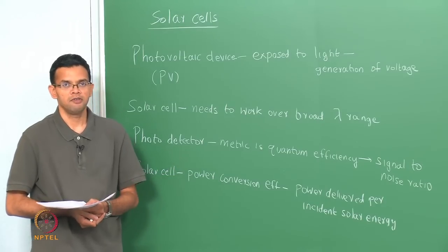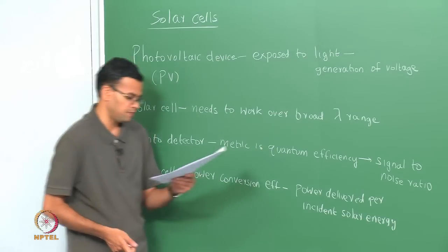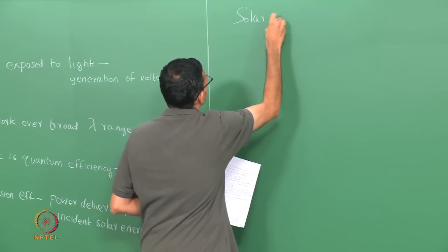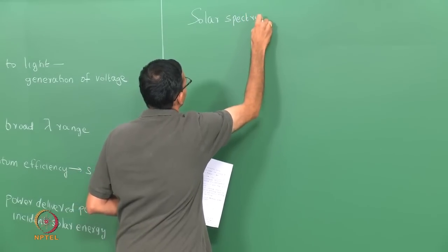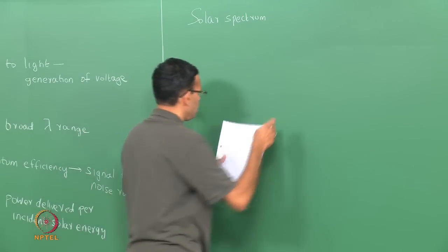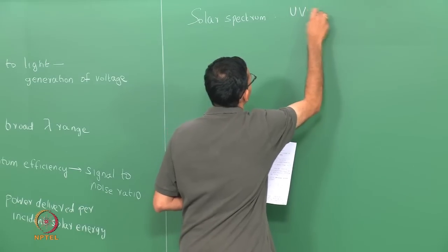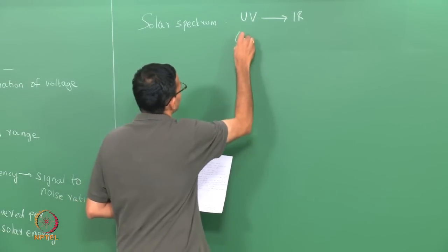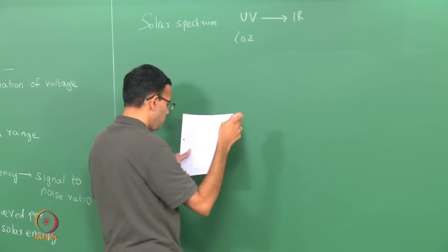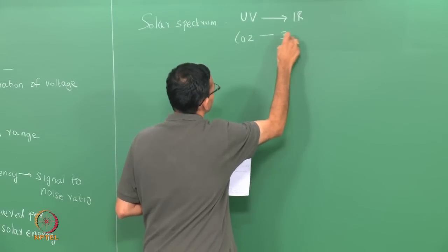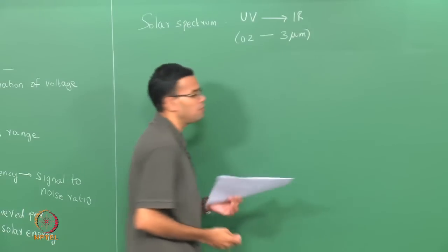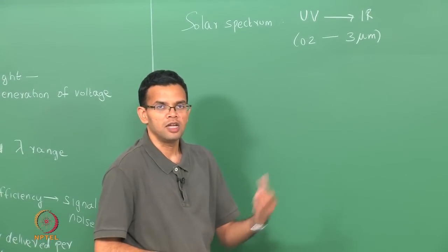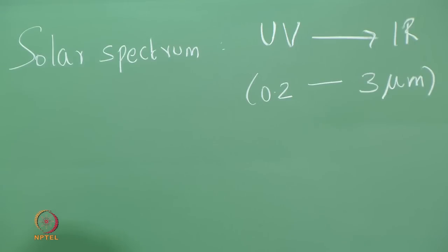To understand the solar cell, we first need to look at the solar spectrum. The solar spectrum primarily ranges from the UV to the IR region, enclosing the visible region. The typical wavelength range goes from around 0.2 microns (200 nanometers) to 3 microns. So 3 microns lies in the IR region and 0.2 in the UV region, and this encloses the visible region as well.